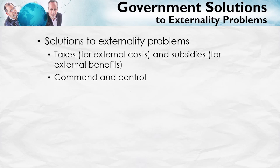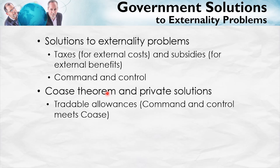Very briefly, let's note where we've been and where we're going. We've been looking at solutions to externality problems — so far, Pigouvian taxes for external costs, Pigouvian subsidies when there are external benefits, and command and control. Next, we want to look at the Coase theorem and private solutions to externality problems — it turns out we've been a little too pessimistic, and there can be some market or private solutions in certain circumstances. Finally, we'll look at tradable allowances, which have been extremely important in reducing acid rain and may become more important in dealing with global climate change. Tradable allowances are a sort of combination of command and control and ideas from Ronald Coase, and actually turn out to be quite similar to Pigouvian taxes and subsidies as well.